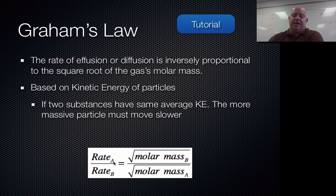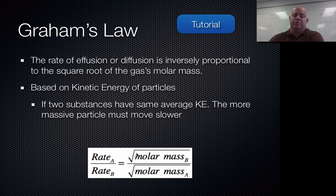So here's our equation. You take the rate, or the speed, essentially, of substance A divided by the rate of substance B. That will equal the square root of the molar mass of B divided by the square root of the molar mass of A. Notice how A is in the numerator here and A is in the denominator here because it's inversely proportional, so they're inverted of each other as you look at that equation. So let's take a look at a practice problem.